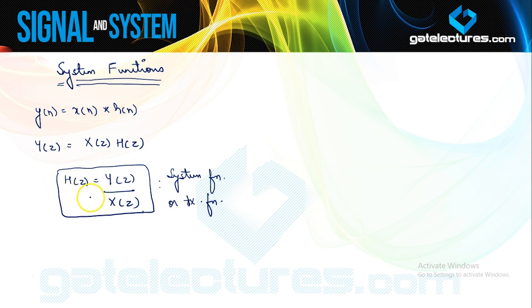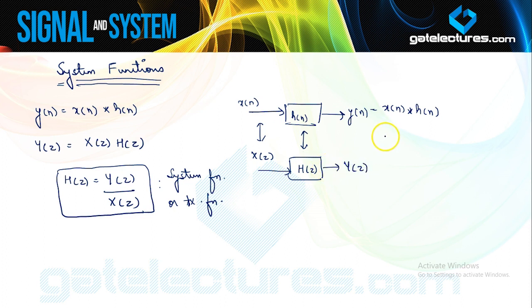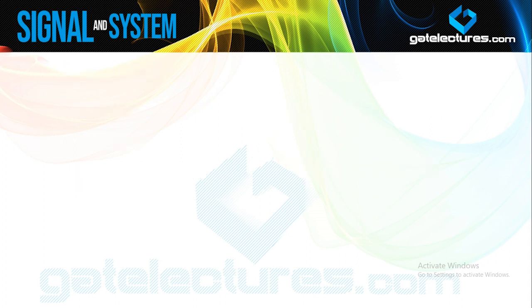The system function H(Z) completely characterizes the system — we have already seen this in the Laplace domain as well. Suppose this is my system: I am applying an input X(N), and H(N) is the impulse response of the system. Then the output is going to be the convolution of the input with the impulse response. Now if I transform the complete system into Z domain, then H(Z) is my system function, X(Z) is the input transformation, and consequently the output is given as the multiplication of Z-Transforms of the input and the impulse response. The Z-Transform of the impulse response alone is what we are calling the system function.